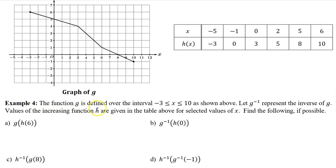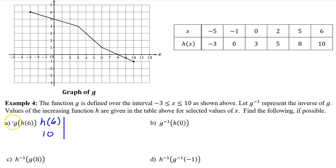Example 4: the function g is defined over the interval from negative 3 to 10. Let g inverse represent the inverse of g. Values of the increasing function h are also given in the table for selected values of x. Find the following if possible. Part A: working from the inside out, we first must evaluate h at 6. h at 6 is 10. Moving outward, we now evaluate g at 10. g at 10 is negative 1. So that's the answer for part A.